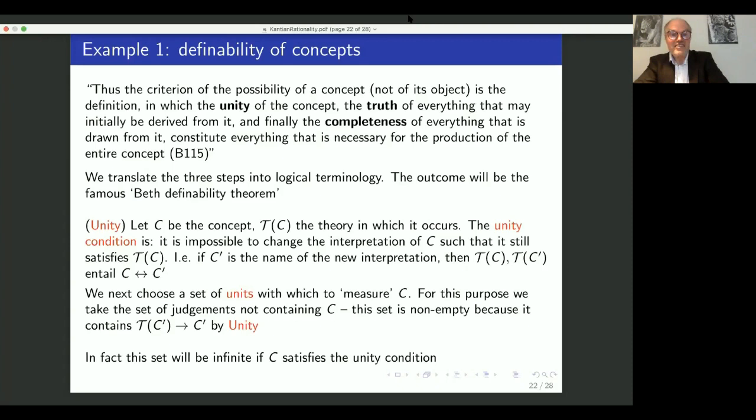So, let's look at the unity condition. So we have a concept that is to be defined and a theory in which it occurs. And the unity condition is you cannot change such that it still satisfies the theory. In other words, if C prime is the name of a new interpretation of the concept, then the original theory and the theory with the changed interpretation, the alleged changed interpretation, entails that the two interpretations are equivalent.